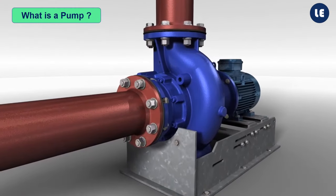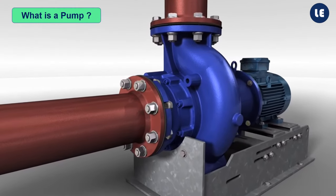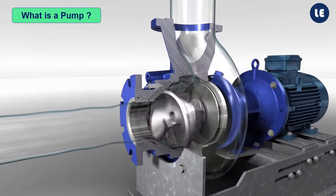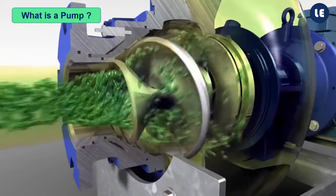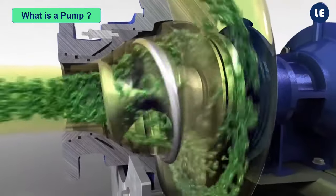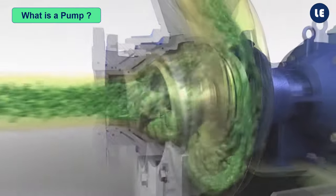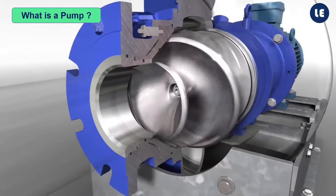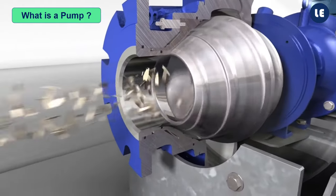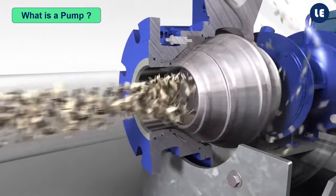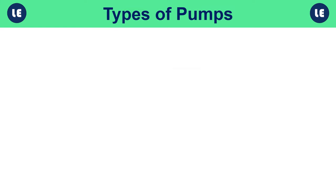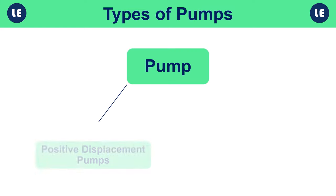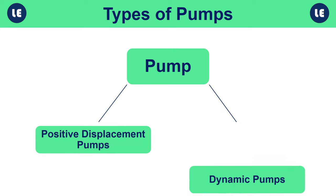A pump is a device which moves fluids by means of mechanical action from one place to another. Pumps also add energy to a fluid, increasing fluid pressure. It is a hydraulic device that lifts fluids from low to high levels, converting the fluid's mechanical energy into pressure energy. In general, there are two main types of pumps: positive displacement pumps and rotodynamic pumps.